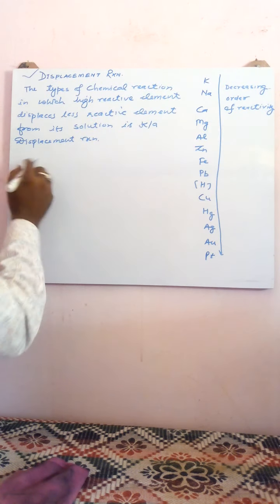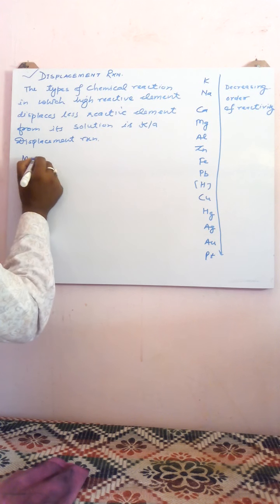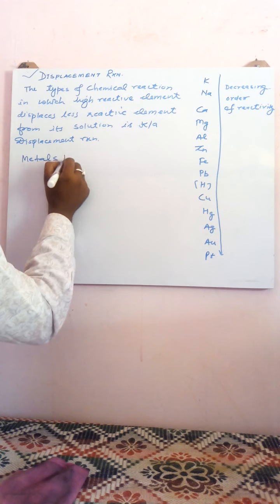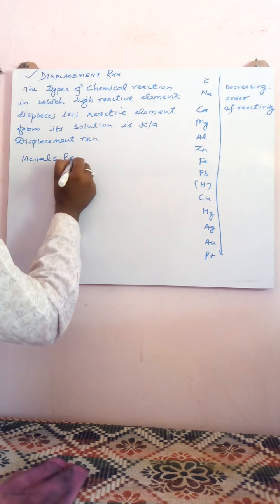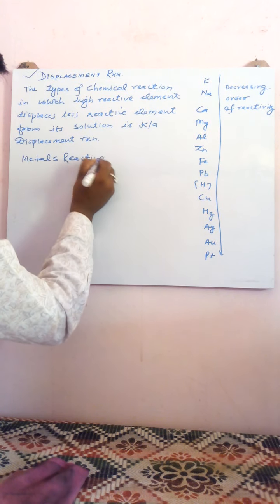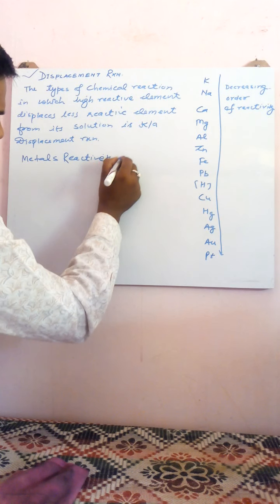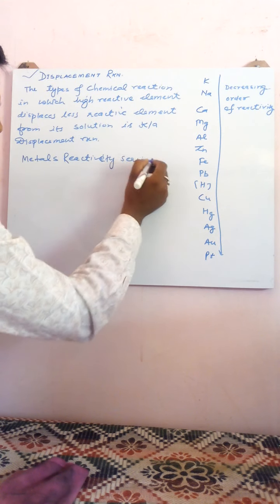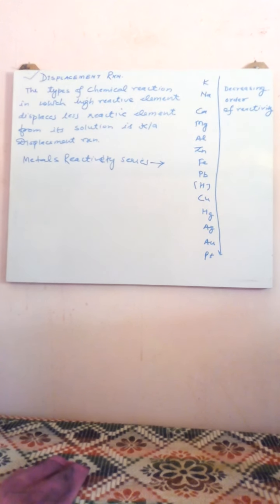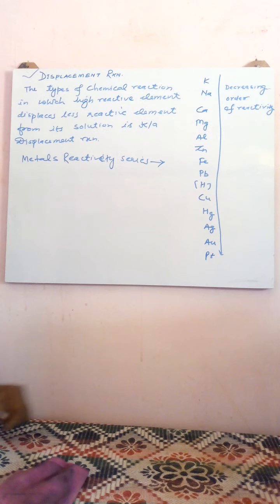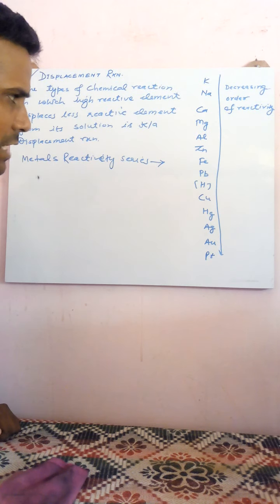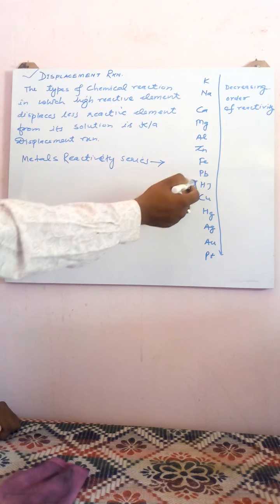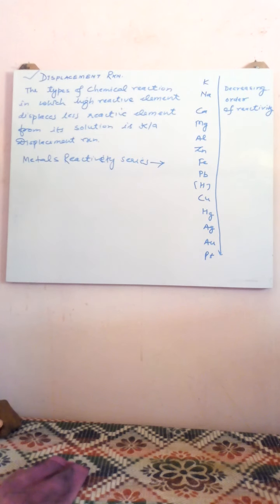The metals reactivity series — as I have written here — lists: potassium, sodium, calcium, magnesium, aluminium, zinc, iron, lead, hydrogen (enclosed in bracket), copper, mercury, silver (Ag), gold (Au), and platinum.